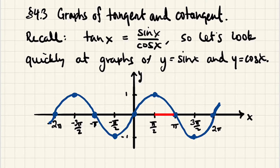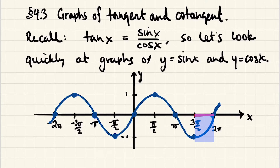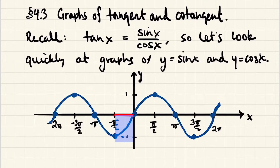Angles between π over 2 and π correspond to second quadrant angles, and in the second quadrant sine is positive — and indeed the graph is positive there. Third quadrant angles are between π and 3π over 2, and in the third quadrant sine is negative, which agrees with our graph being below the axis. Same with the fourth quadrant, and angles between −π over 2 and 0 are fourth quadrant angles where sine is negative.